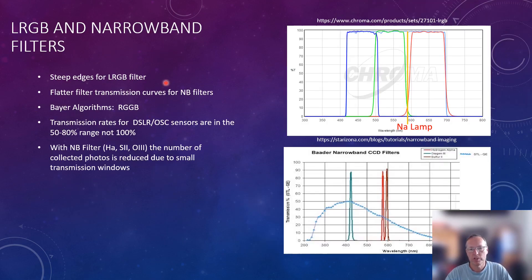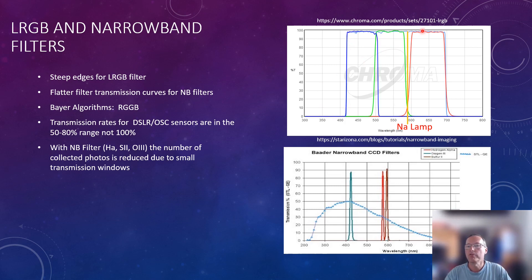When talking about mono versus color cameras, we also need to discuss filters. At the top are LRGB filters — very steep filters for blue, green, and red. There's a gap between the green and red filter because there is light pollution from lamp emissions at that wavelength, and that gets cut out. So LRGB filters act like a built-in light pollution filter. The luminance filter covers the whole visible spectrum from about 400 nanometers up to 700 nanometers.